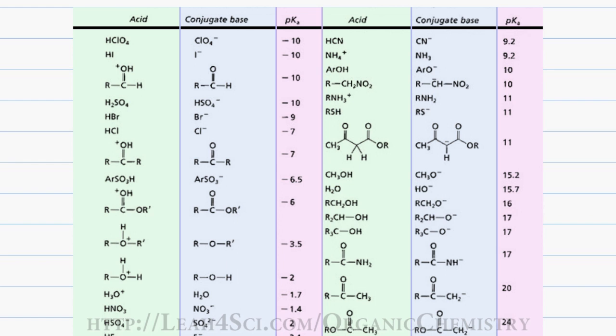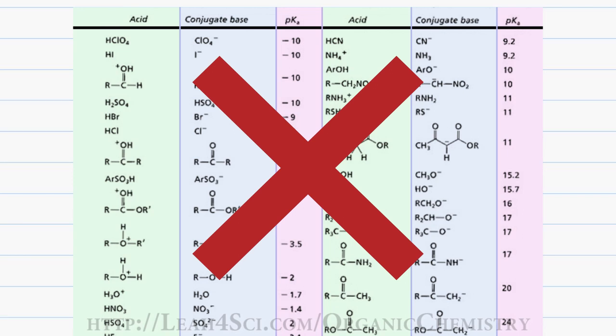But often, you're not given a pKa table to determine the acid strength and so you have to understand how to actually analyze the atoms or group of atoms to determine if your reaction will proceed quickly, slowly or not at all.